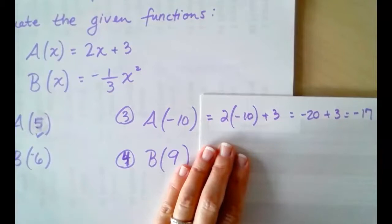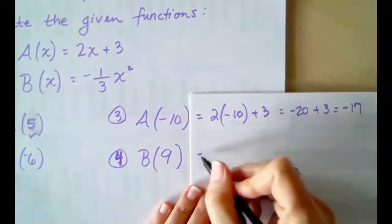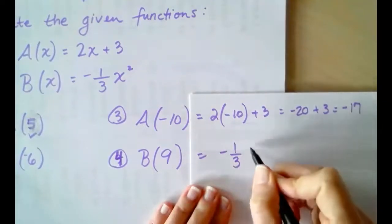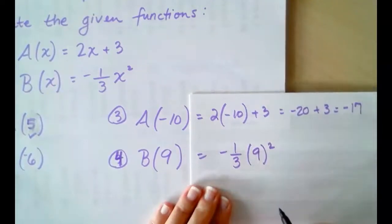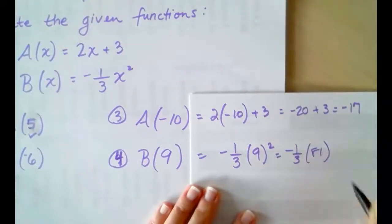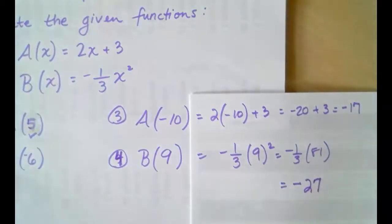So, A(-10) equals -17. Next, the B function. The B function when x equals 9. -1/3 times 9². Square the 9. When we square 9, we get 81. And, -1/3 of 81 is -27. -27 is the evaluation of the B function when we have an input of 9.